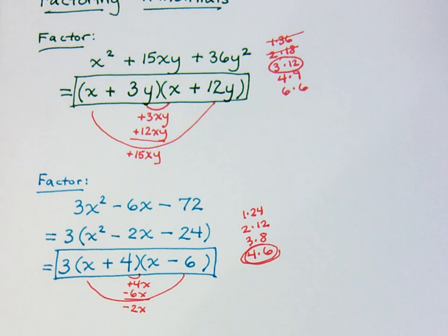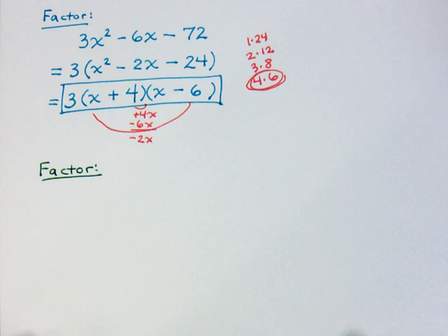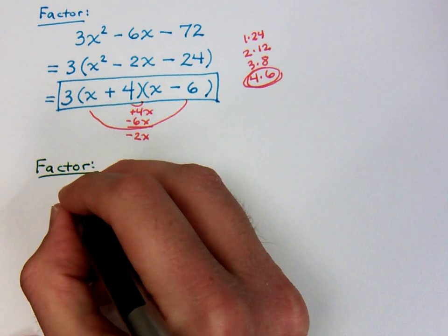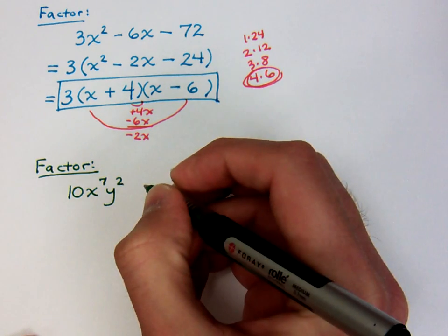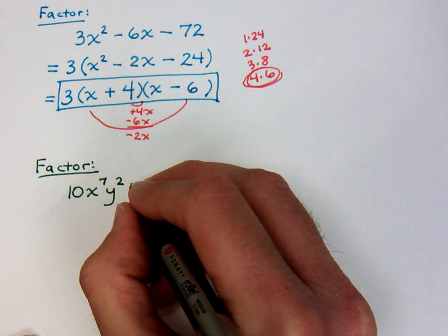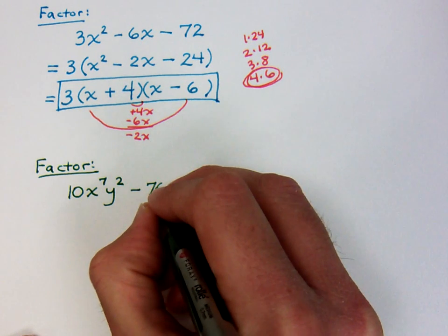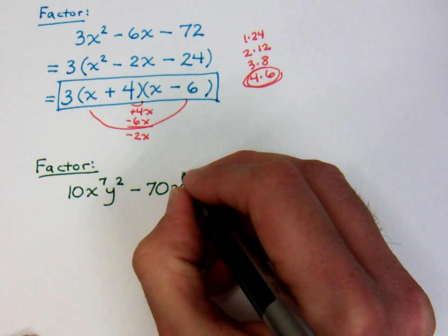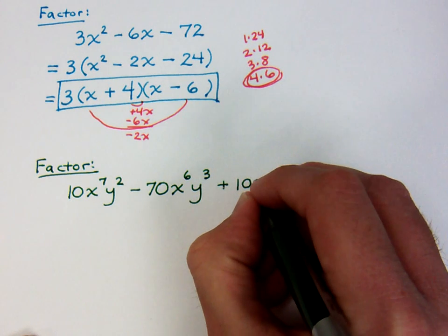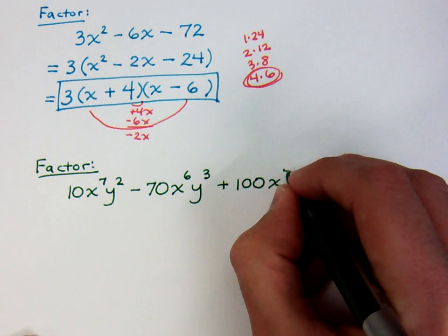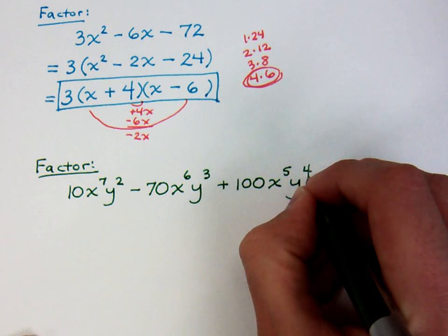Okay, well that doesn't seem to be too bad. Well, let's make things a little bit more exciting, shall we? What if you're asked to factor this guy? Now, let's take 10x to the 7th y squared, so let's do minus, that sounds good, minus 70x to the 6th y to the 3rd, plus 100x to the 5th y to the 4th.